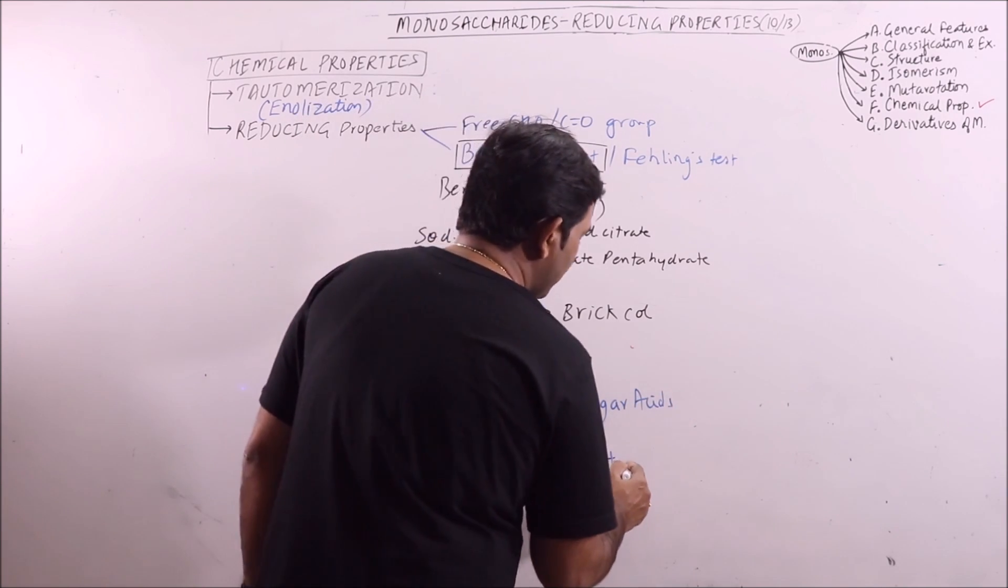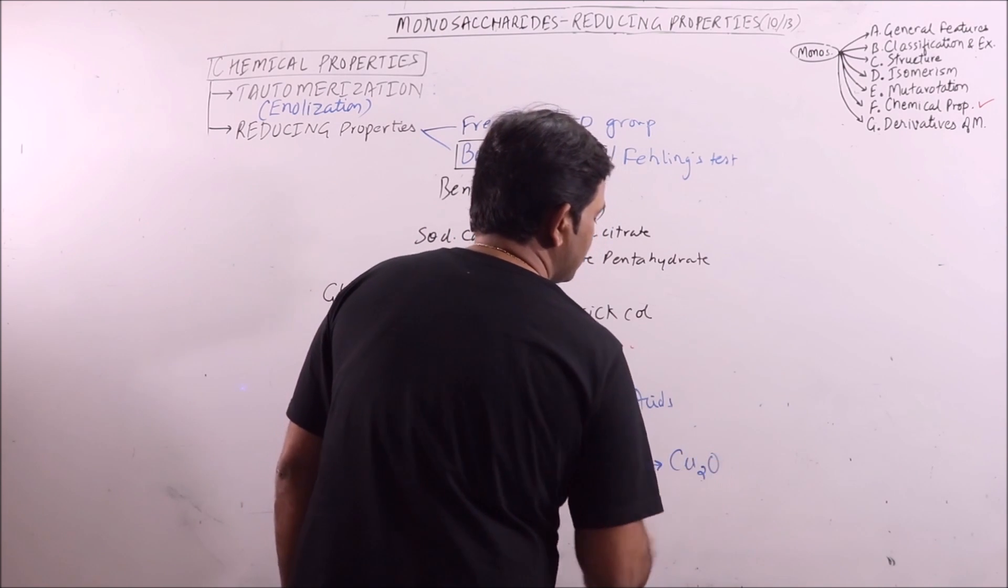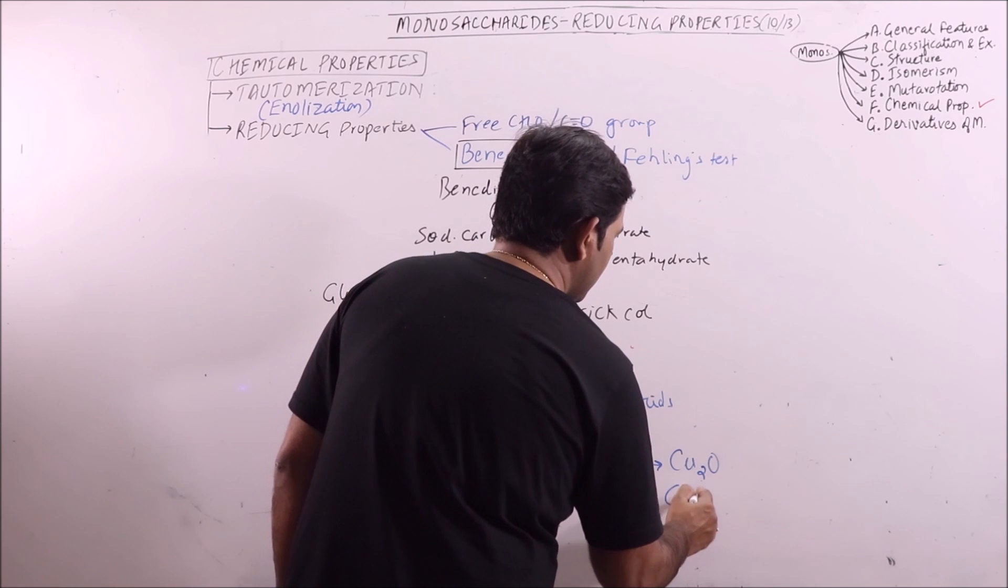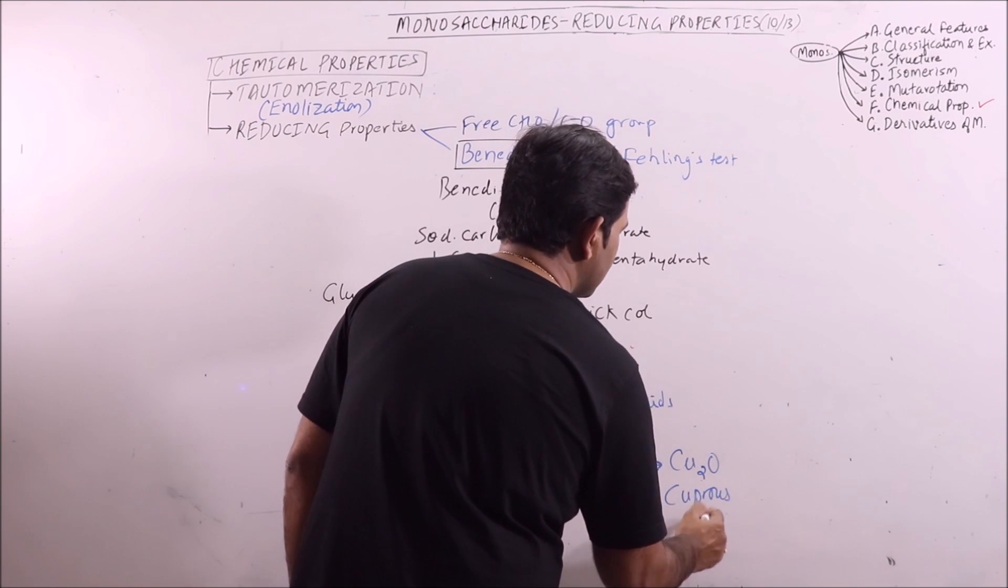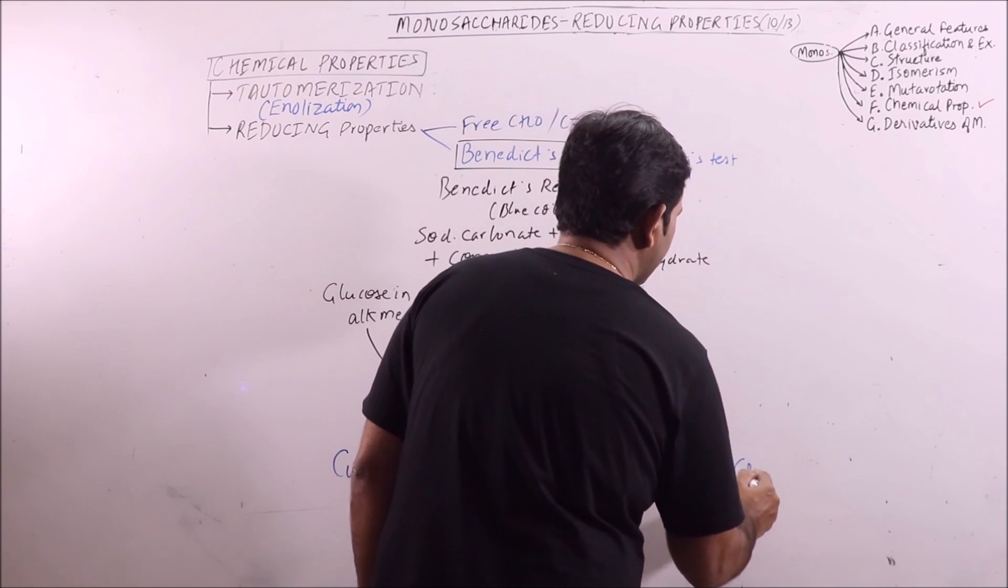And copper ions will form Cu2O, that is cuprous oxide, which is of brick red color.